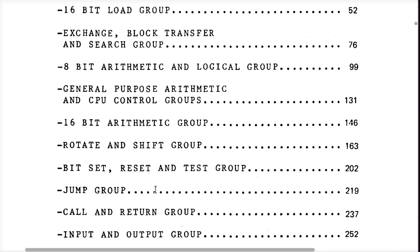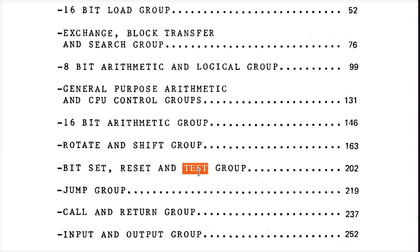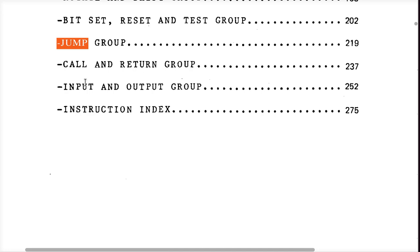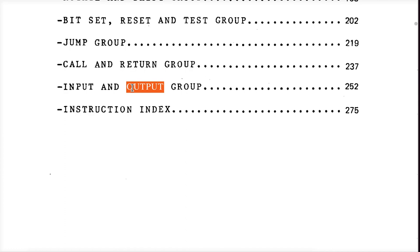The rotating and shifting group is kind of still in the arithmetic-and-logic category, but they put it in its own group. Bit set, reset, and test: these instructions let you turn a specific bit on or off in a register, or ask whether a given bit is a one or zero. Jump — as I alluded to earlier, you're executing one instruction after another and eventually you decide to go back and do that again, jumping back to the top of a loop. Call and return — that's for calling subroutines and returning back to the caller. Input and output — writing values to devices and reading values in, dealing with I/O devices as distinct from dealing with memory.